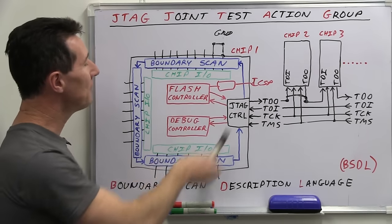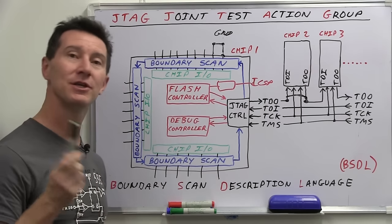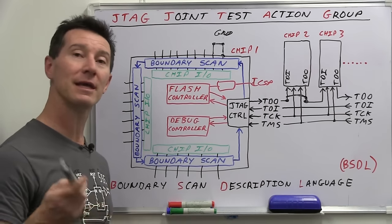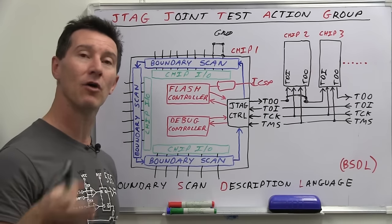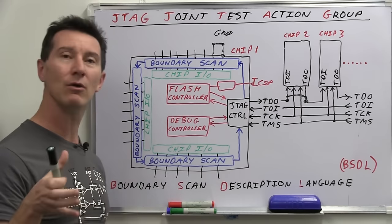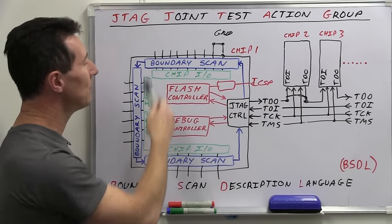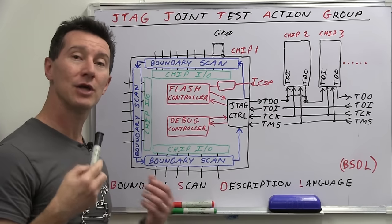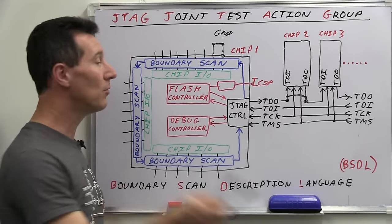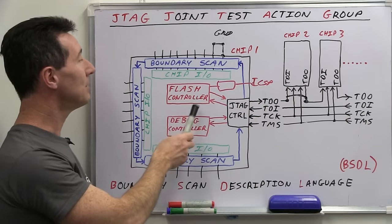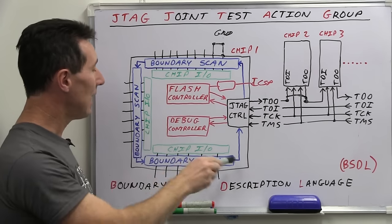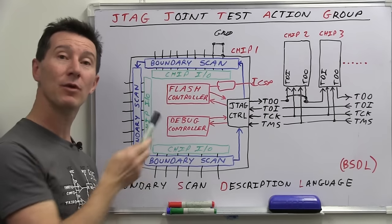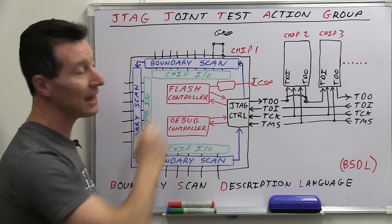And any JTAG chip that meets the JTAG standard will have an associated file that you can just download from the manufacturer's website, and it defines the entire JTAG interface for that particular chip. And that's known as a boundary scan description language, or BSDL file that you can get from the manufacturer. And that's a variant of VHDL. So it's like a VHDL sort of language that describes what each individual pin does, and the description ID for each chip, and all that sort of stuff.